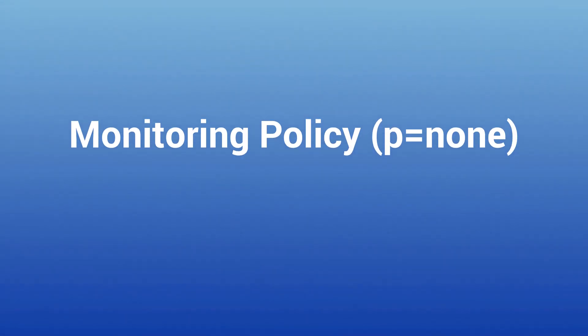P=none is the first and the most crucial stage of your DMARC journey, no matter how many sending sources you use. This monitoring stage will not affect your email deliveries. The importance of it lies in data gathering — getting a full picture of your sending sources, fixing any misconfigurations, and gradually enforcing your policy to higher levels.